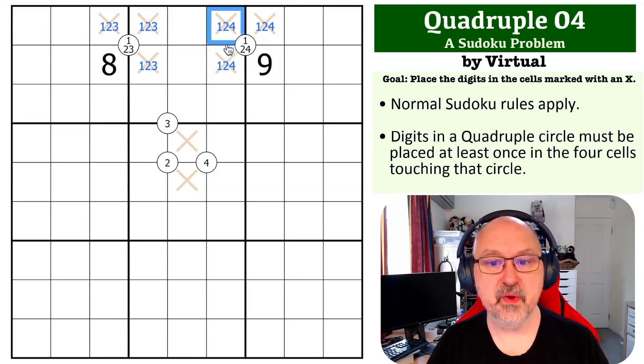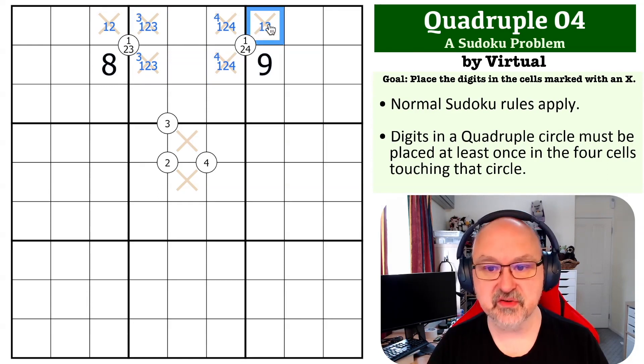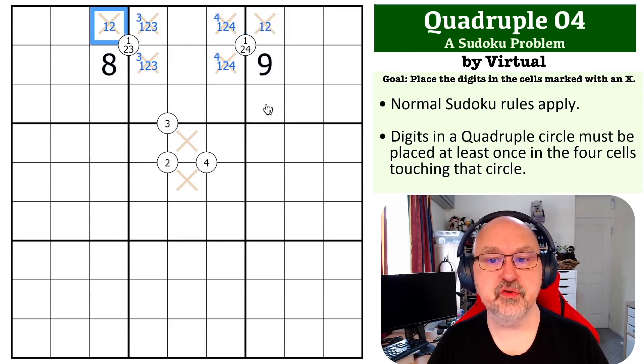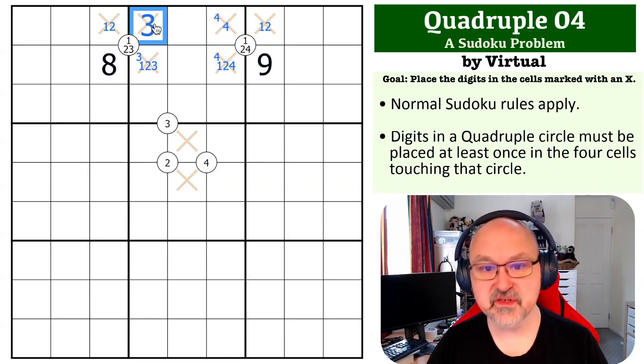Now we've got a one, two, three, four quad in box two, but we can't put a three here so the three has to go here, which means this is not a three. The four has to go here, which means this is not a four.